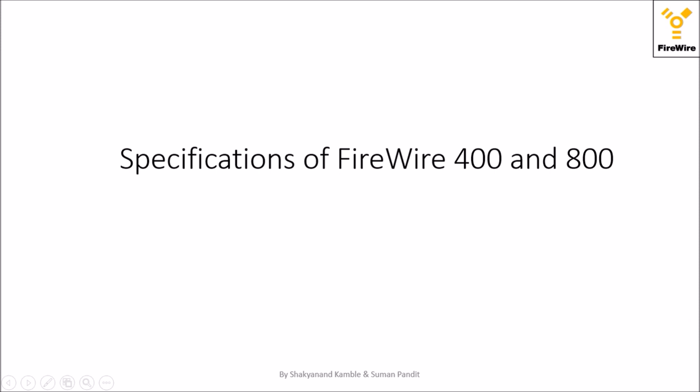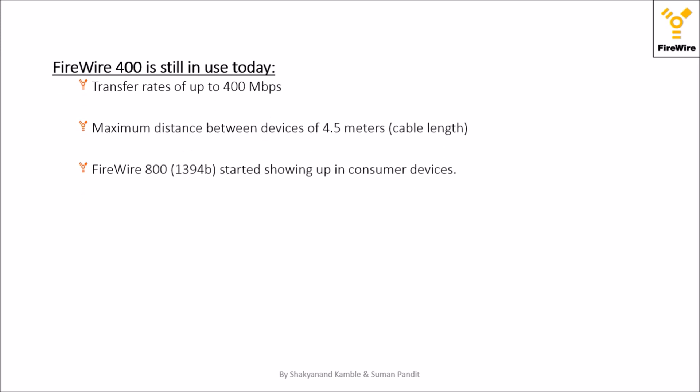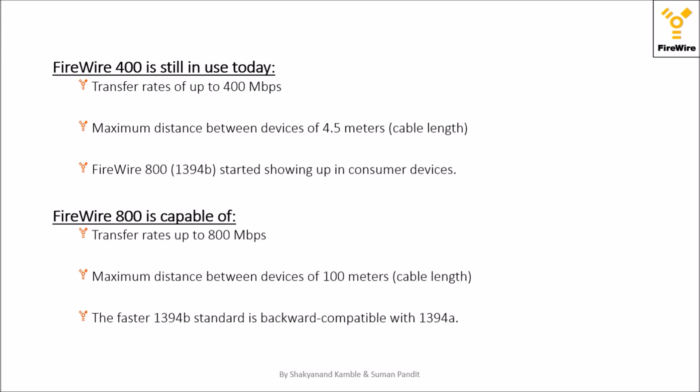There are two types of FireWire: FireWire 400 and FireWire 800. FireWire 400 has transfer rates up to 400 MB per second, whereas FireWire 800 has transfer rates up to 800 MB per second. The cable length for FireWire 400 is up to 4.5 meters, whereas for FireWire 800 it is up to 100 meters.